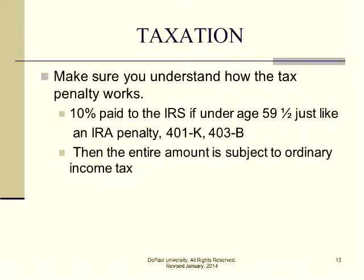Slide 13: make sure you understand how the tax penalty works. If you're taking out $10,000 and it's an IRA, a 401K, a 403B, or a modified endowment, and you're under 59½, you pay a 10% penalty to the IRS on the $10,000 — that's $1,000. Then the full $10,000 will be taxed at ordinary income tax rates unless you're down to the basis. So if you're in a 30% tax bracket, between the penalty and the 30%, you paid $4,000 in taxes.